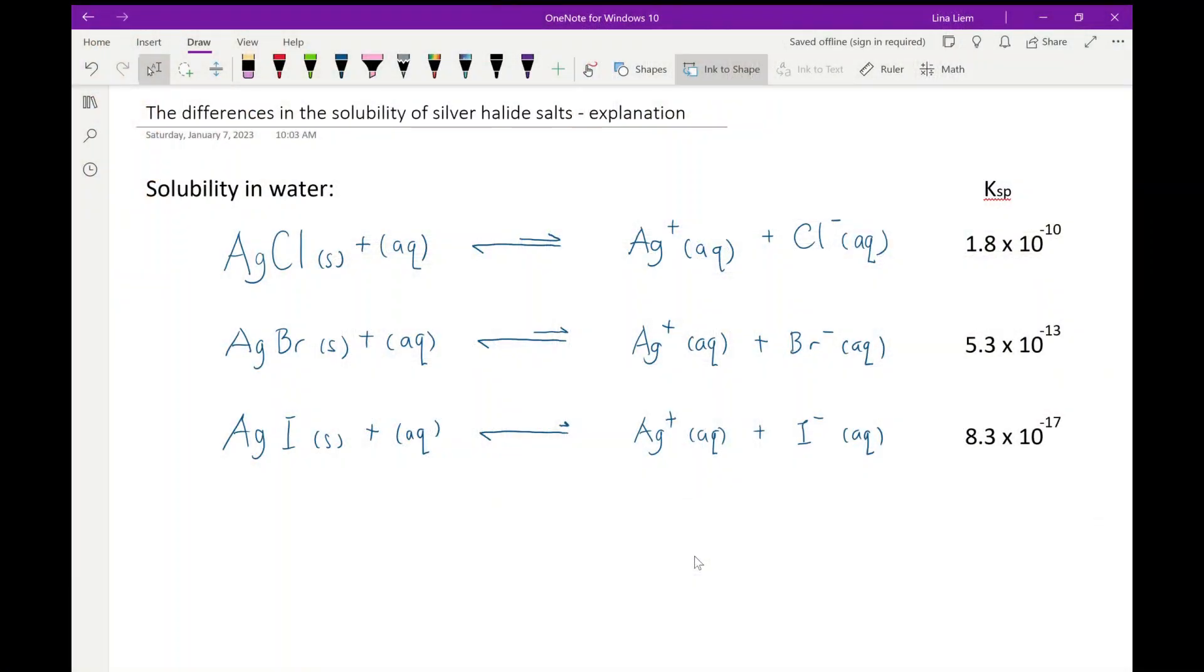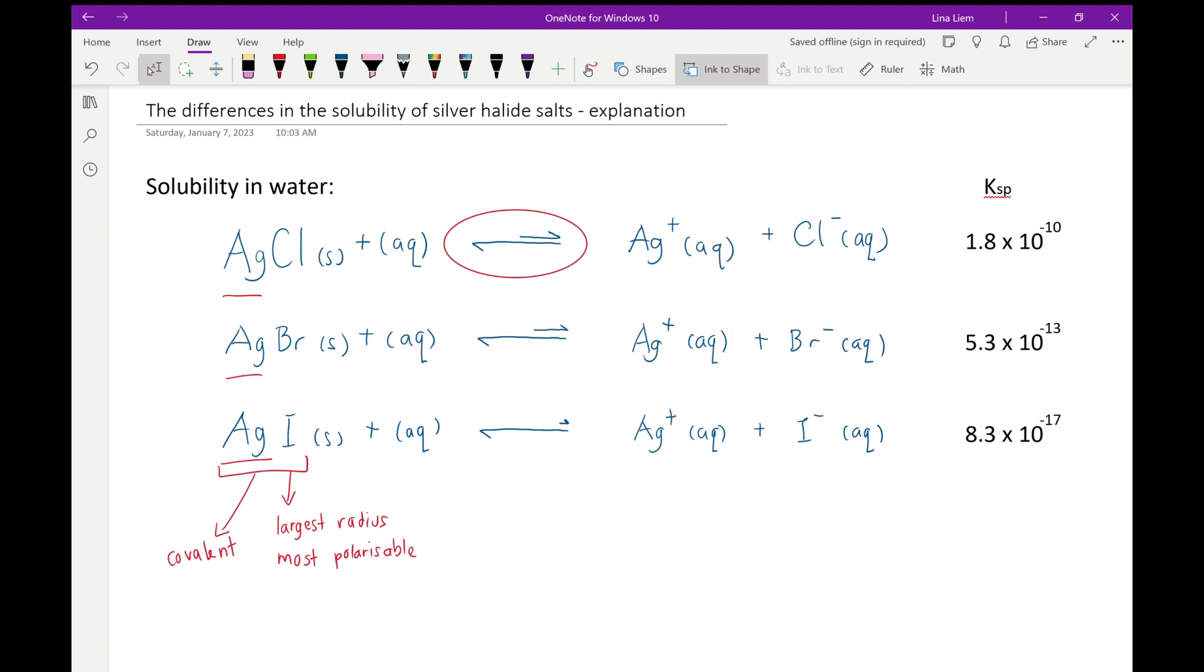So first take a look at the dissolution of these silver halides in water. Silver chloride is the most soluble and silver iodide is the least soluble in water. This is because while all the halides have plus one charge, iodide ion has the largest radius and therefore it is the most polarizable. Because iodide is polarizable, that means silver iodide has a high covalent character. Covalent compounds are less soluble in water than ionic compounds. And also having the least charge density means that iodide has a weaker attraction with water molecules. And thus the hydration enthalpy of iodide is less exothermic than the hydration enthalpy of chloride or bromide. The less exothermic the hydration enthalpy, the less soluble the substance.